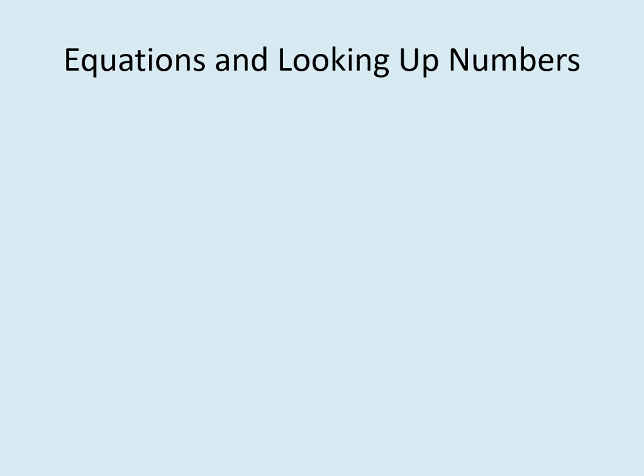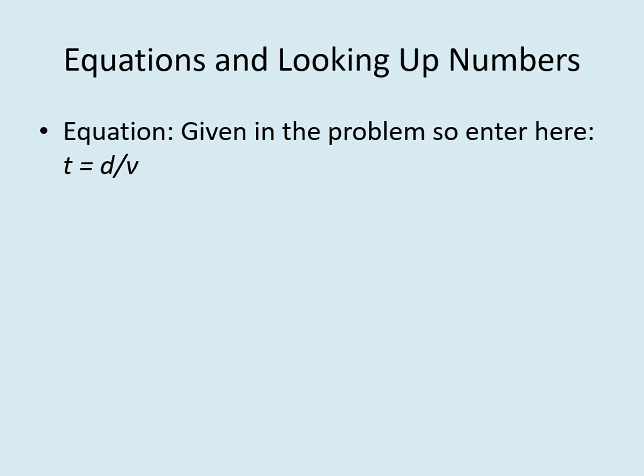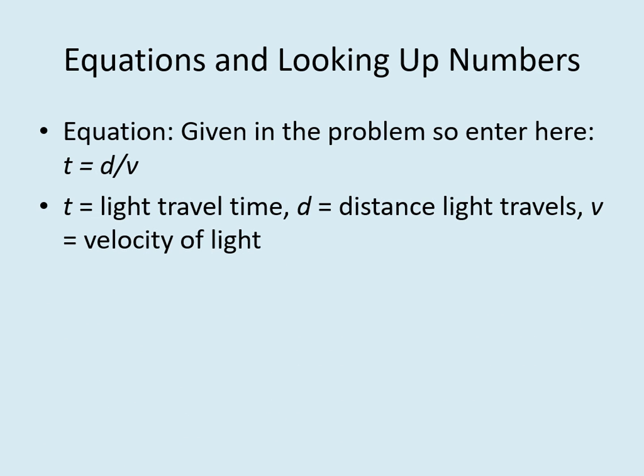The next two boxes will help us get ready to do the calculation. The first one is the equation we need to use to solve the problem. In this case, you've got that equation right in the question, so write it down: T equals D divided by V, meaning time equals distance divided by velocity. Since we're finding light travel times, we'll need to know how far the light is traveling and how fast it's going. The second box is where we put in the values we're going to use. We're looking for two sets of numbers: the distances and the velocity. We already know where to find the distance — that's the distance column in your mystery solar system.